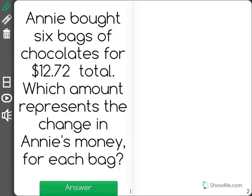Annie bought six bags of chocolates for $12.72 total. Which amount represents the change in Annie's money for each bag? So we know that she spent $12.72 total among six bags of chocolate.